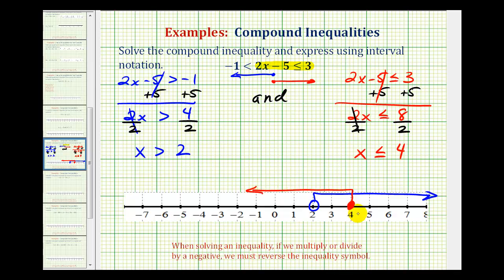Now this is not the graph of our solution. We want all of the numbers that satisfy both inequalities at the same time, which means graphically we want the interval that's graphed both in blue and red. So you can see it would be the numbers between 2 and 4, not including 2, but including 4.